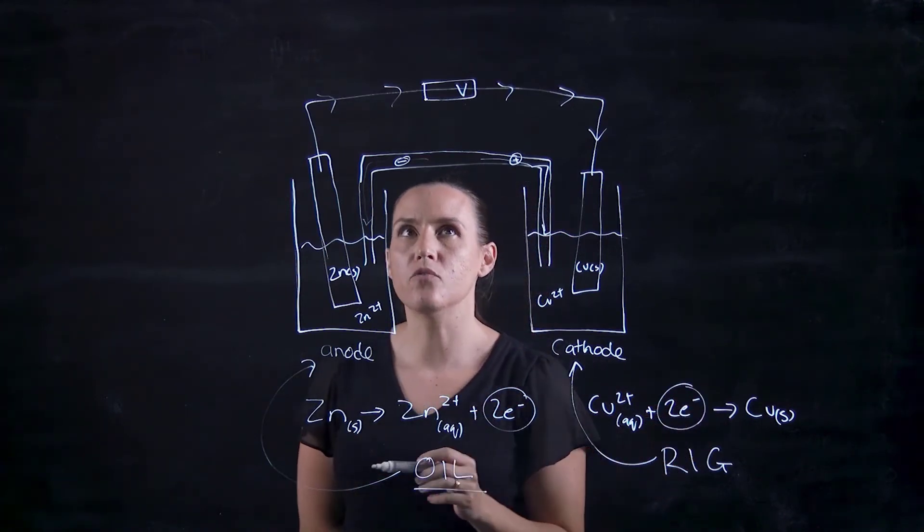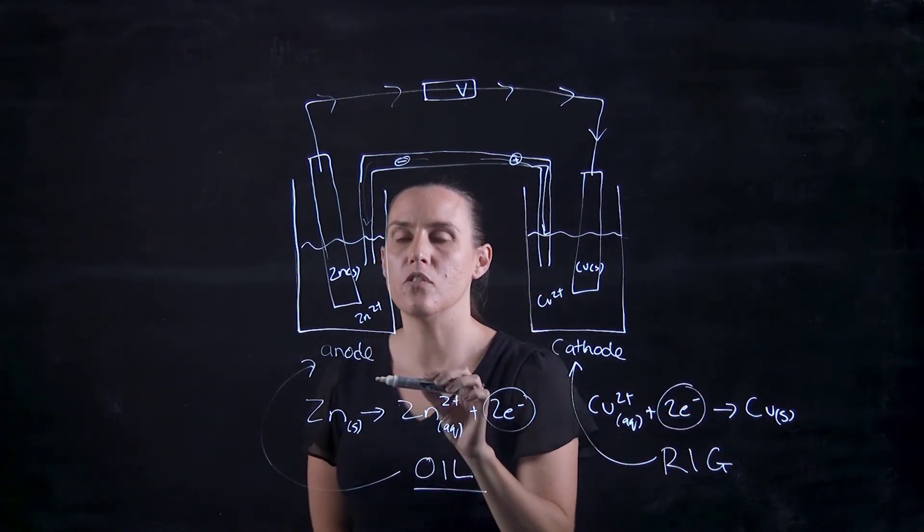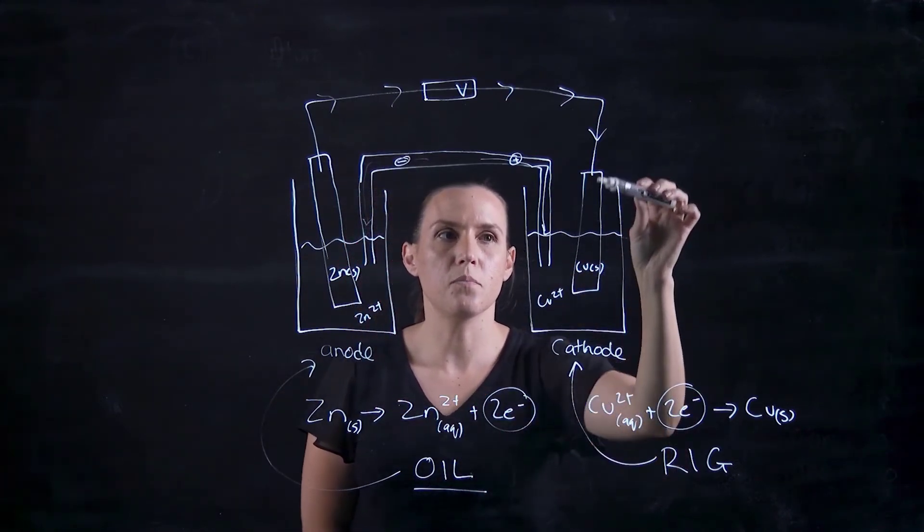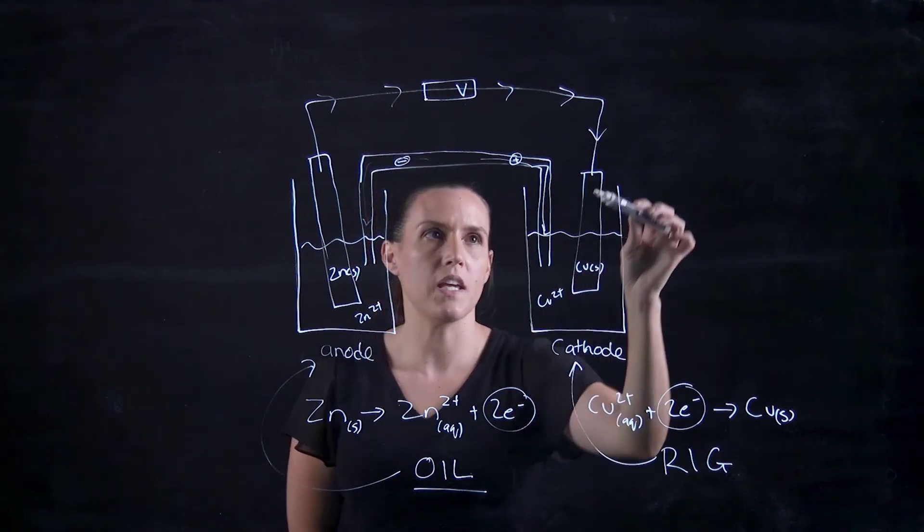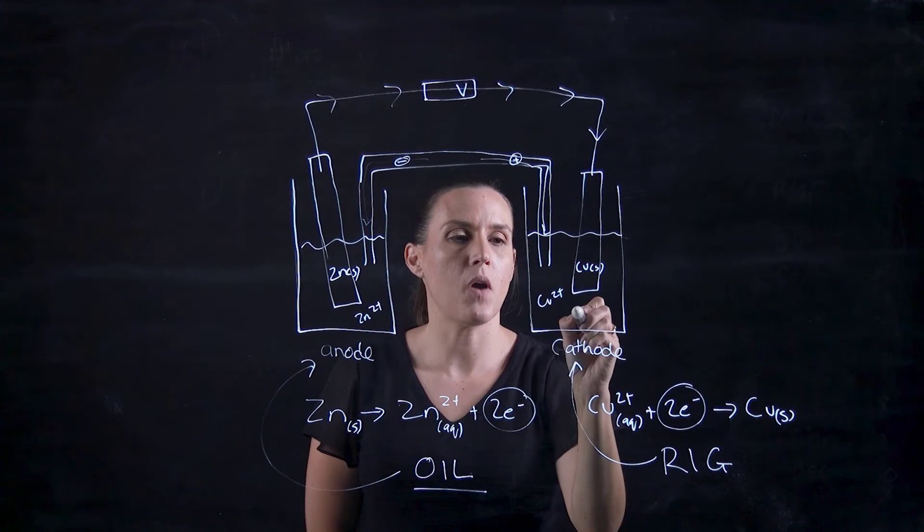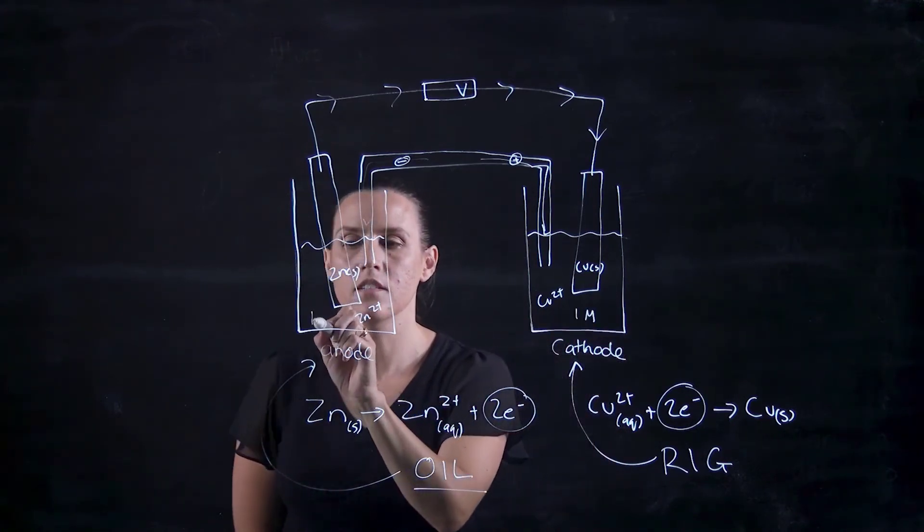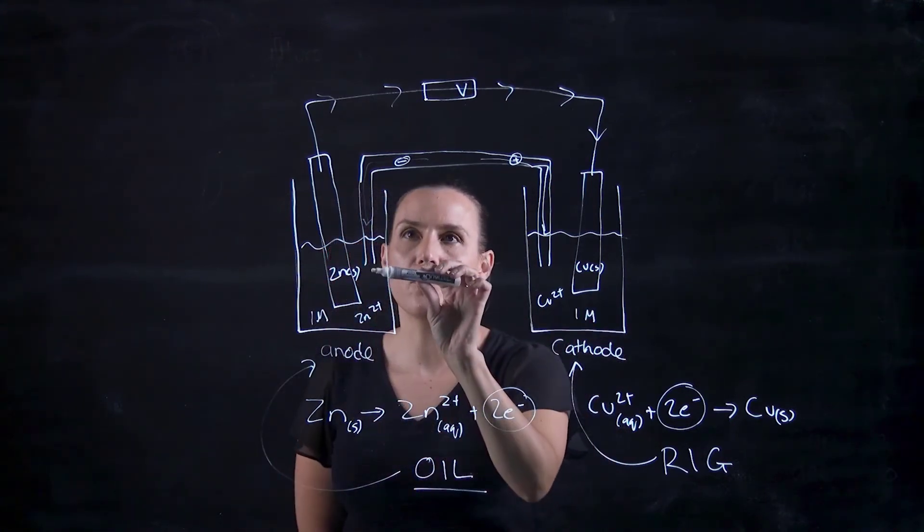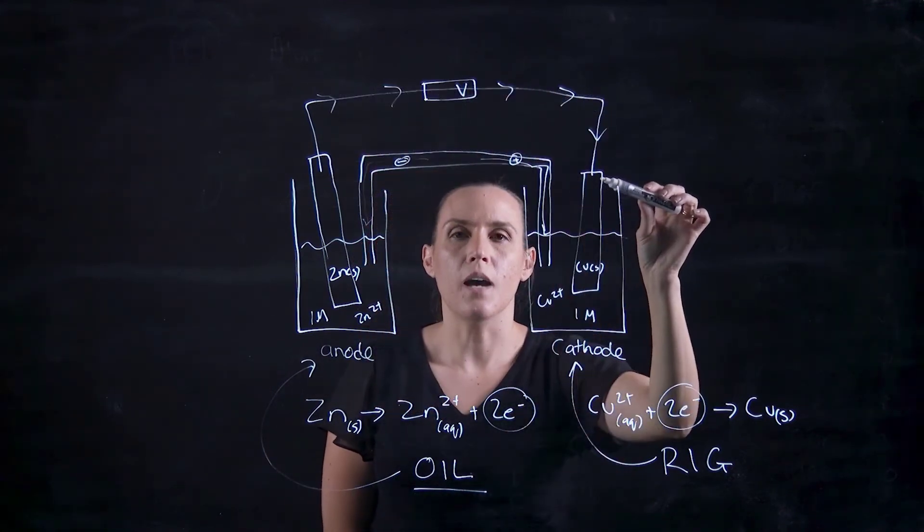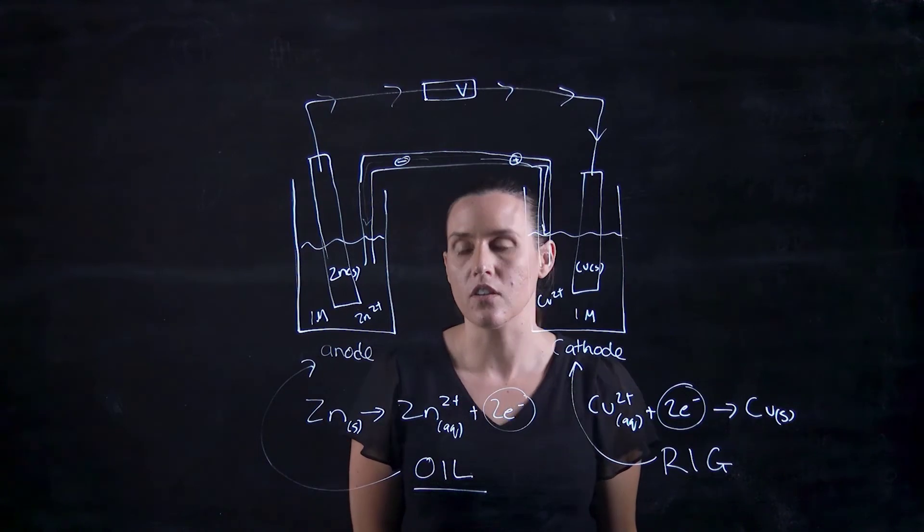When we're drawing this out, we want to draw out the solids or whatever your electrodes would be—it might be gas if it's hydrogen—your solutions, which are one molar for standard conditions. You've then got your salt bridge connecting them and your electrodes being connected through an external circuit.